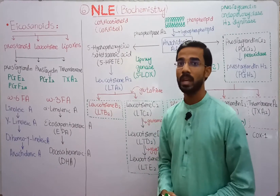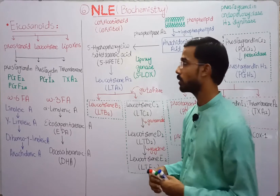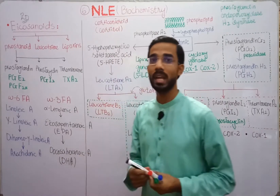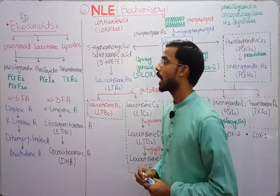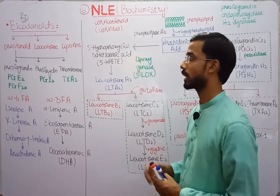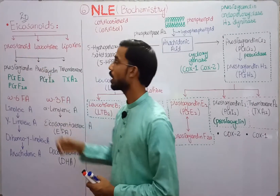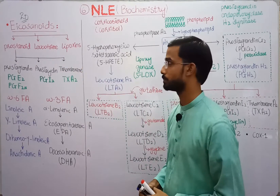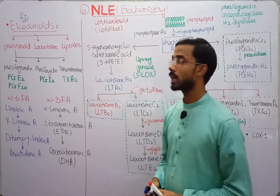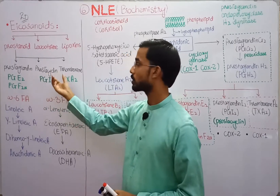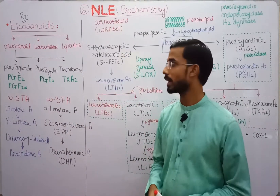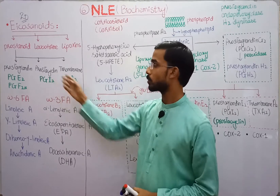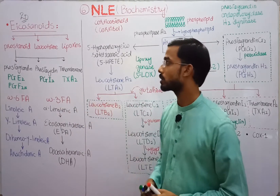Eicosanoids are basically 20-carbon compounds. Eicosanoids are further divided into different categories. The first one is Prostanoid, the second one is Leukotriene, and the third one is Lipoxene. Prostanoids are further divided into Prostaglandin, Prostacycline, and Thromboxane. Prostaglandin includes PGE2, PGF2-alpha; Prostacycline is PGI2; and Thromboxane is A2.